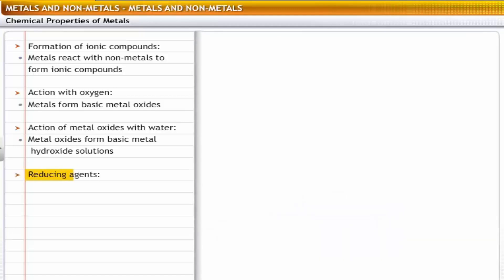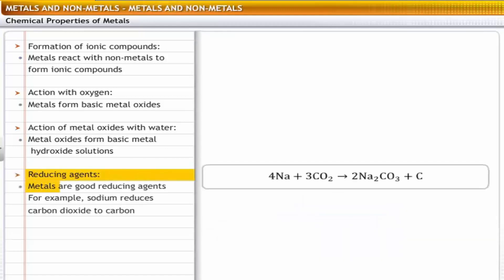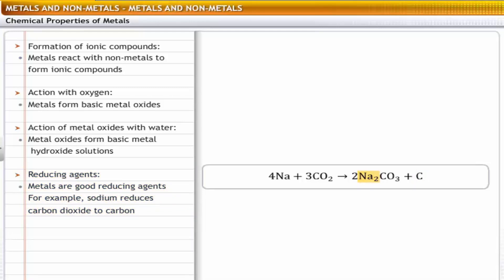Action as reducing agents: metals have a tendency to lose electrons — in other words, they are good reducing agents. For example, carbon in the combined form accepts electrons from sodium and gets reduced to carbon in the free state. Thus, sodium acts as a reducing agent.